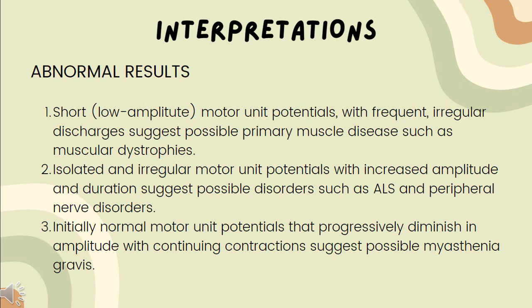Interpretations for abnormal results: Short or low amplitude motor unit potentials with frequent irregular discharges suggest possible primary muscle disease such as muscular dystrophies. Isolated and irregular motor unit potentials with increased amplitude and duration suggest possible disorders such as ALS and peripheral nerve disorders. Initially normal motor unit potentials that progressively diminish in amplitude with continuing contraction suggest possible myasthenia gravis.